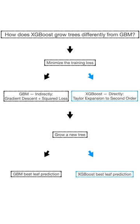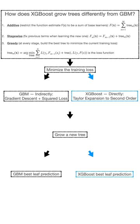How is XGBoost different from GBM, the gradient boosting algorithm that came before it? Today I focus on their differences in minimizing the training loss. Both GBM and XGBoost build greedy-forward, stage-wise additive ensemble models. They restrict the function estimate to be a sum of base learners. I'll focus on using decision trees as base learners.